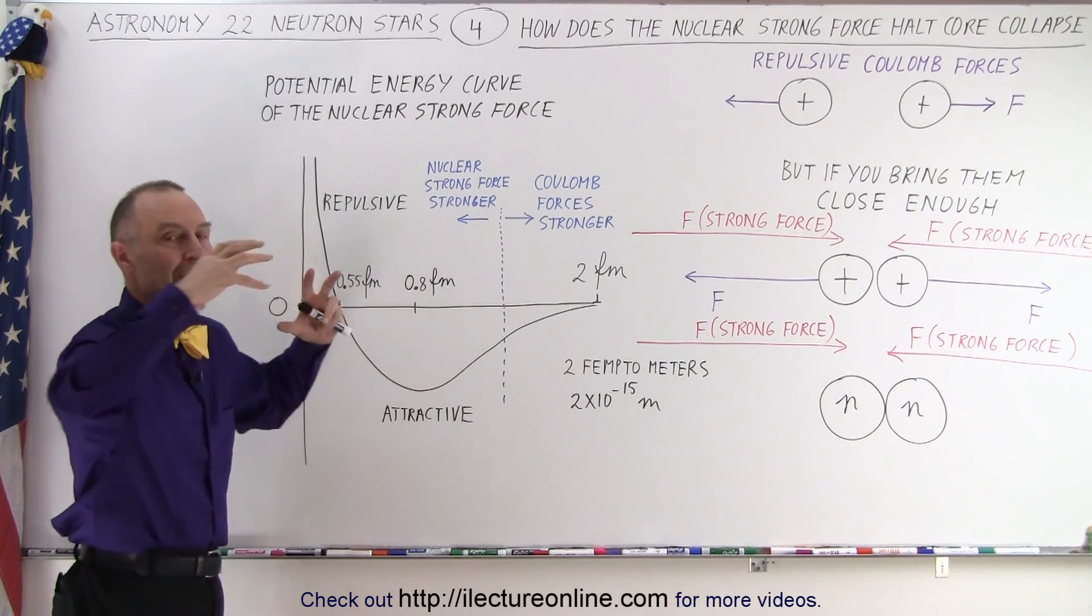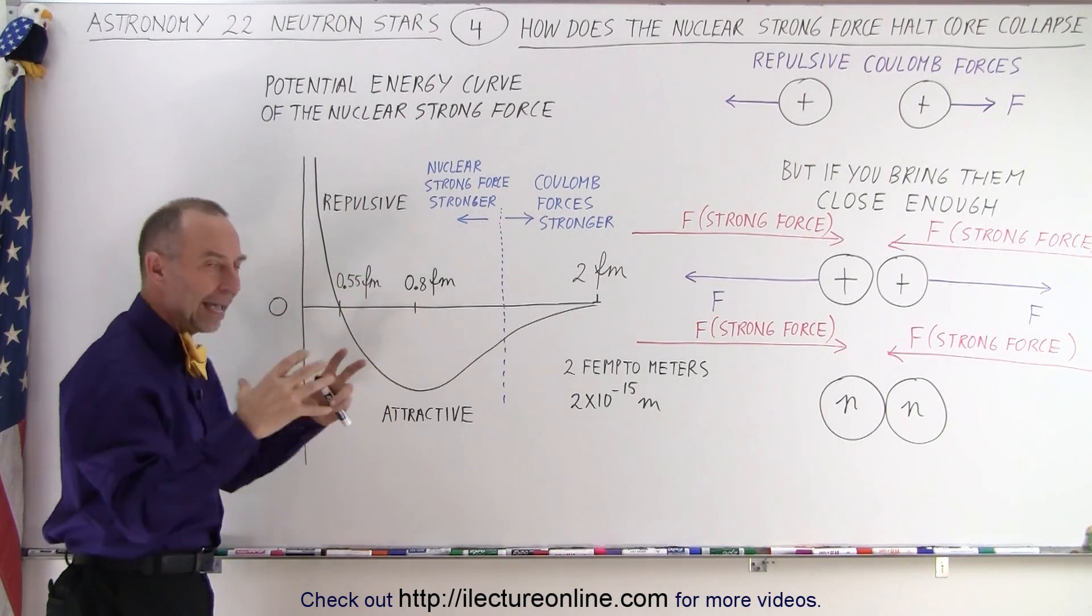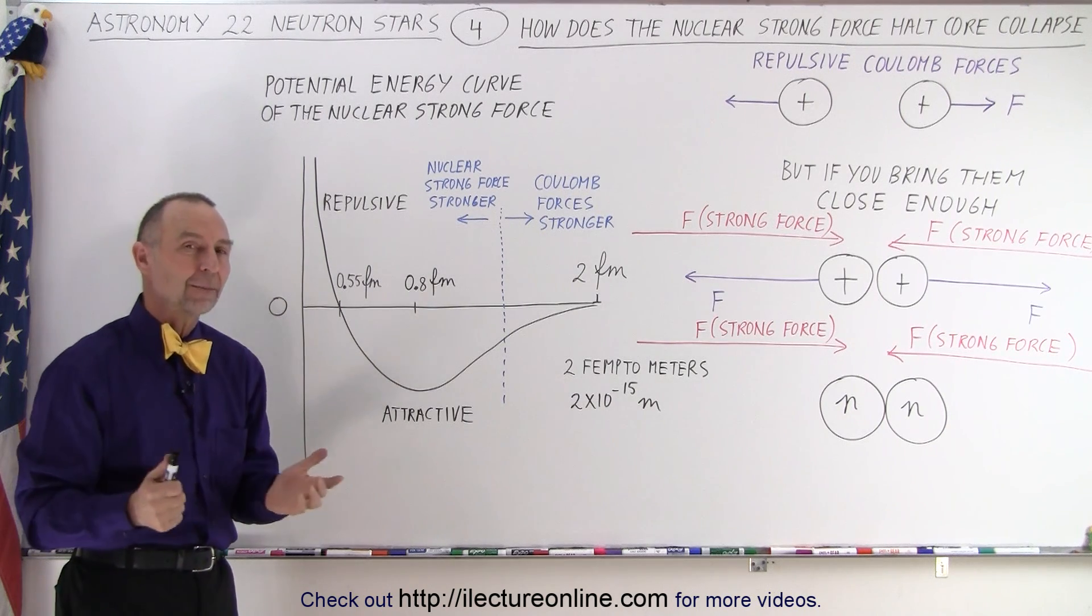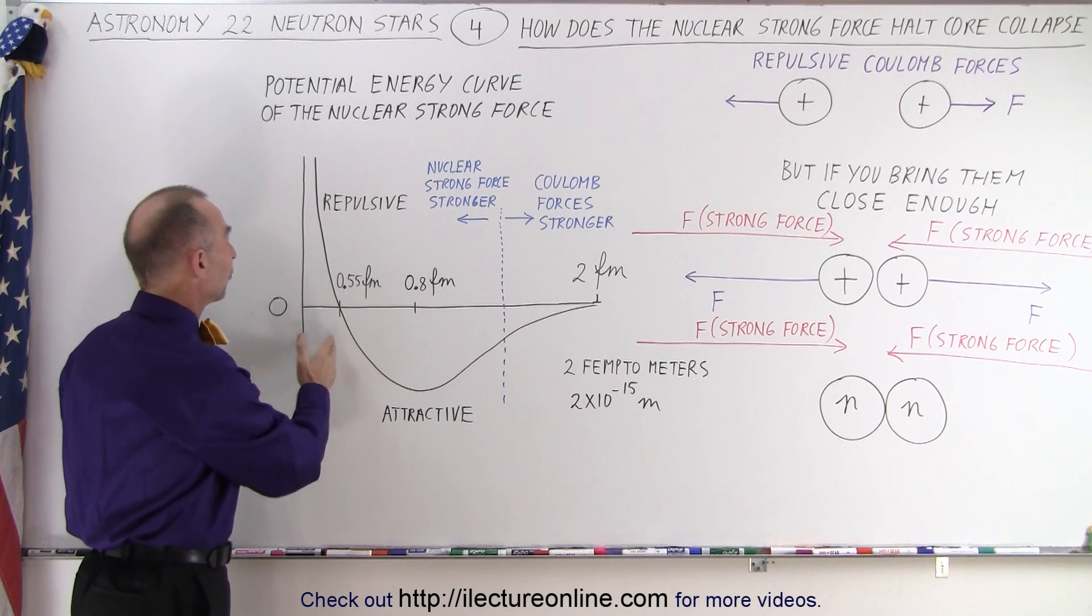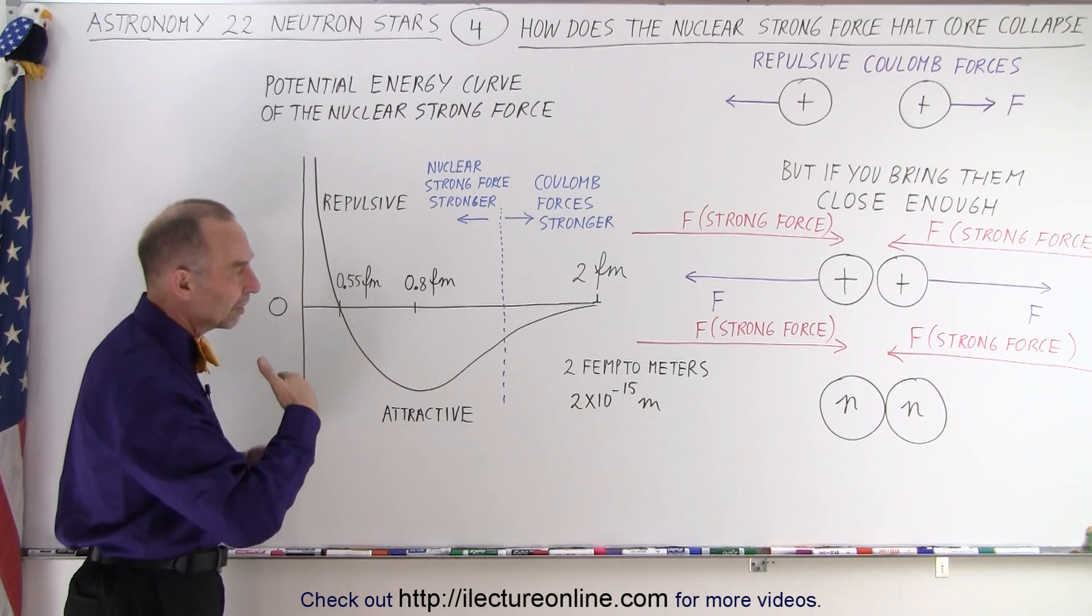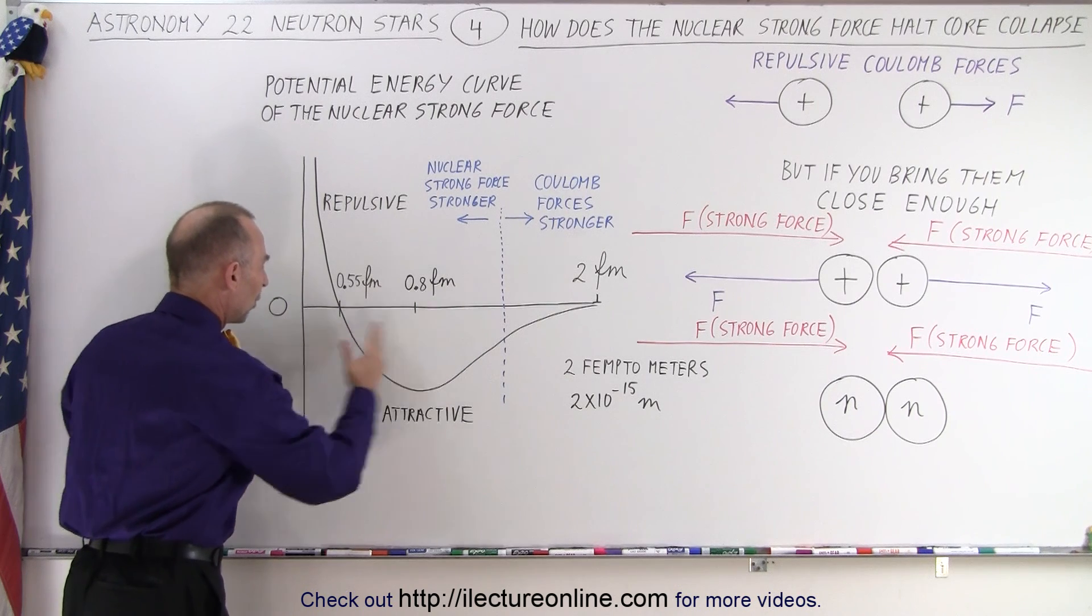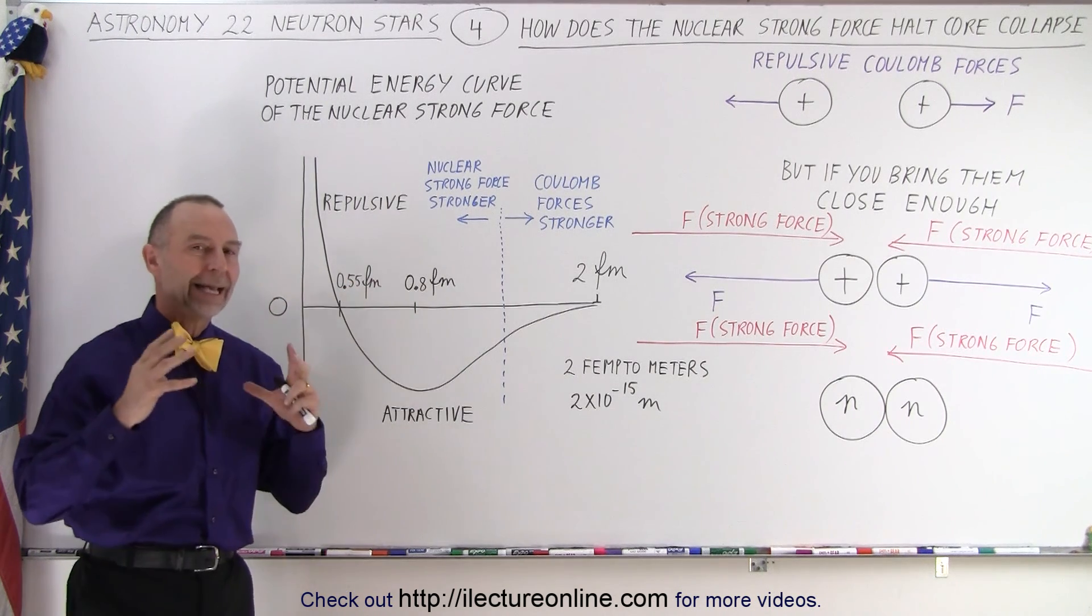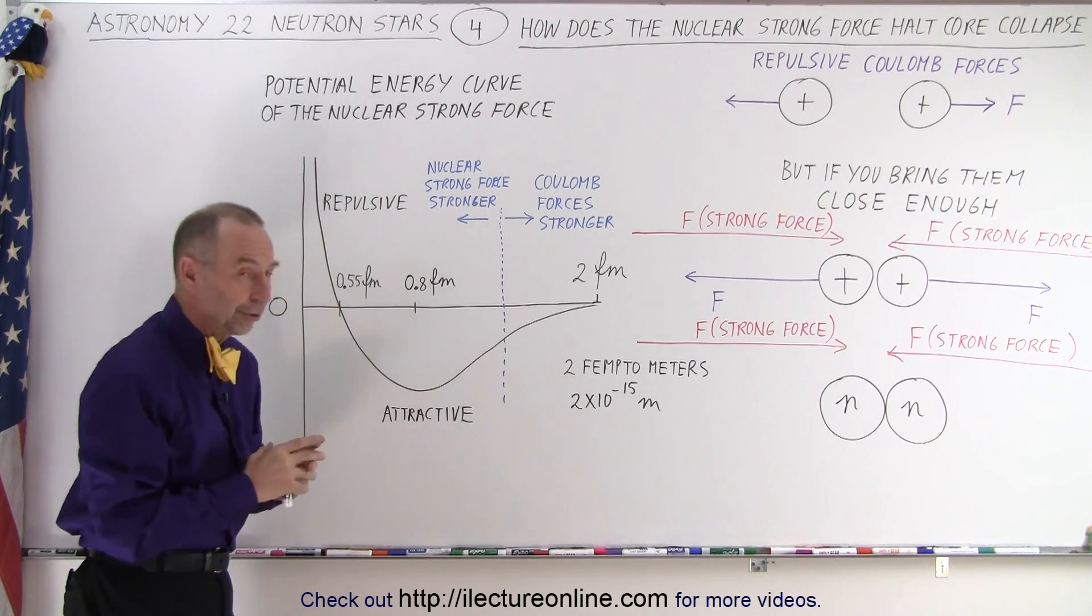And that's where the bounce back comes from, the initial bounce back. And then the neutron star settles in at a radius, or I should say diameter, of about 20 kilometers or about 12 miles. So, that is the combination. First of all, we have the neutron degeneracy force, and secondly, we have the nuclear strong force. Once you try to push the neutrons too close together, that pushes back as well. And that's what keeps the star from collapsing, or the core of the star, from collapsing any further.